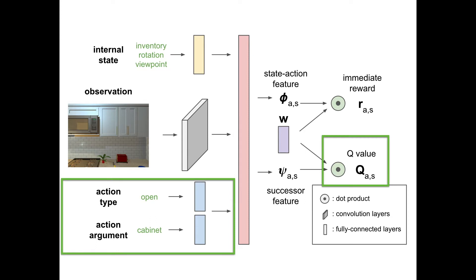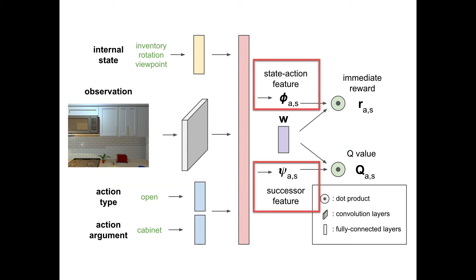Our model generates these plans by estimating the Q value, or the expected value of future rewards for each action. We use the successor representation to decouple environment dynamics and reward functions. This decoupling enables task transfer.